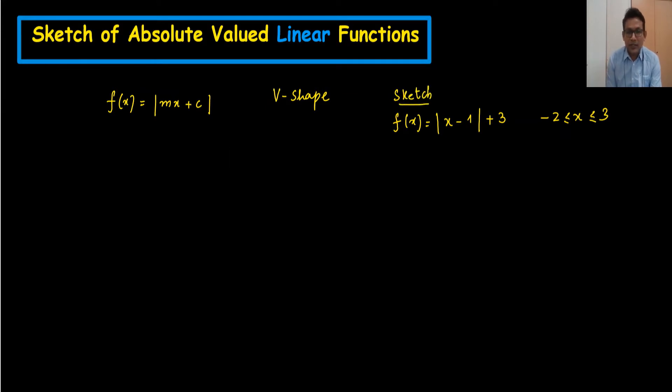How we can draw the sketch? Very simple. Step number one: we have V-shape graph, so we always find the vertex first. Find vertex means the V-shape, this is called the vertex, the corner. So we always find the vertex. And how we find the vertex?